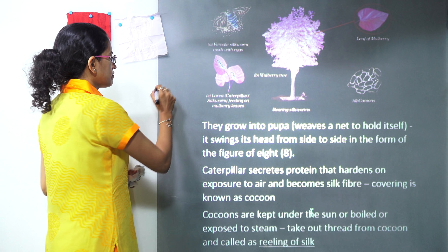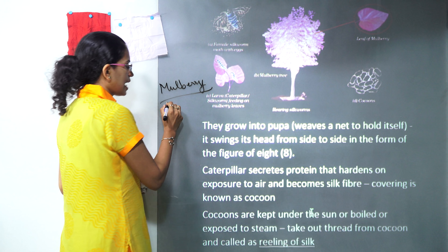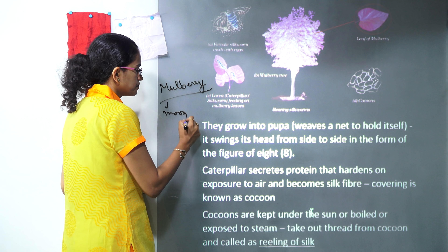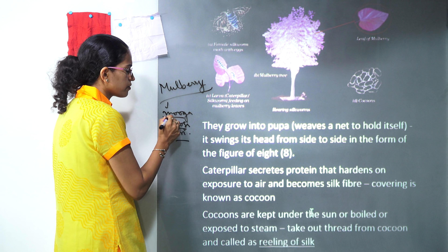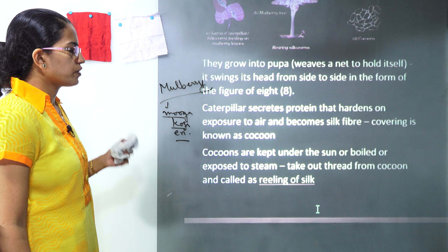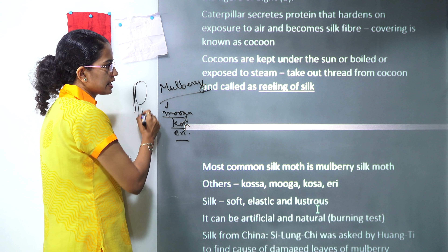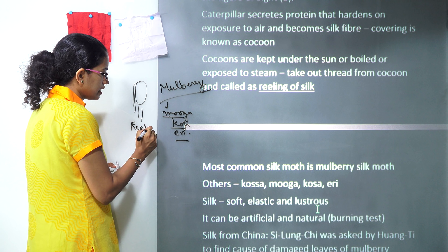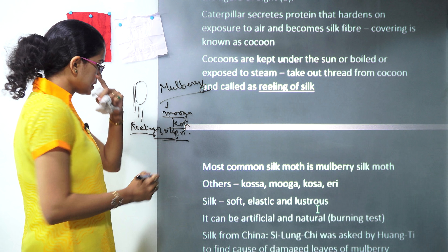In India, the most common variety is the mulberry silk moth. Other commonly found varieties include Muga, Kosa, and Eri. When the cocoons are processed, the fine threads obtained from the cocoon are extracted through a process known as reeling of silk. Finally, this silk is woven.